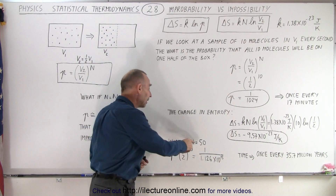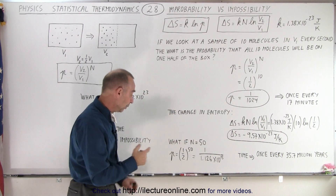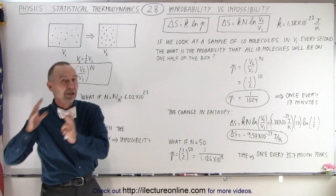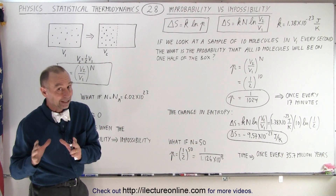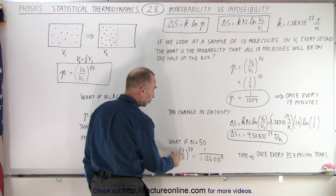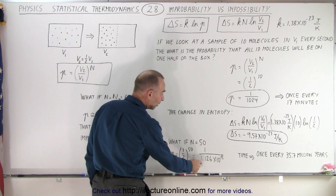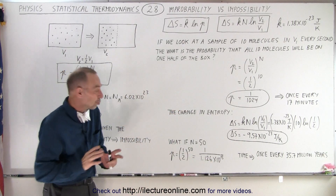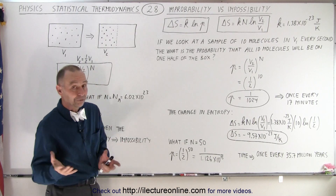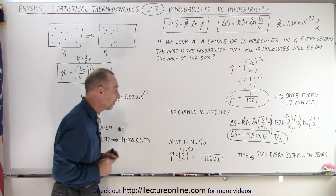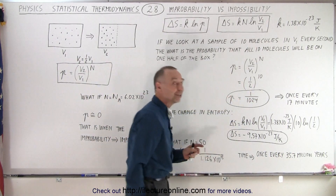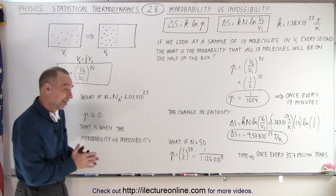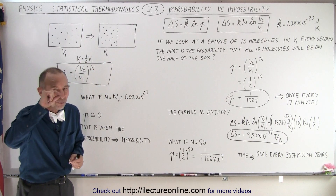So what happens if we're dealing with 50 molecules instead of 10? Well, the probability of all 50 ending up in one side of the box and none on the other side is not nearly as likely. You can see the probability is one half to the 50th power, so it's one in 1.126 times 10 to the 15th. 10 to the 15th is 1,000 trillion. So if we do it once every second, it will take 35.7 million years for that event to occur just once, just with 50 molecules. Very, very unlikely.